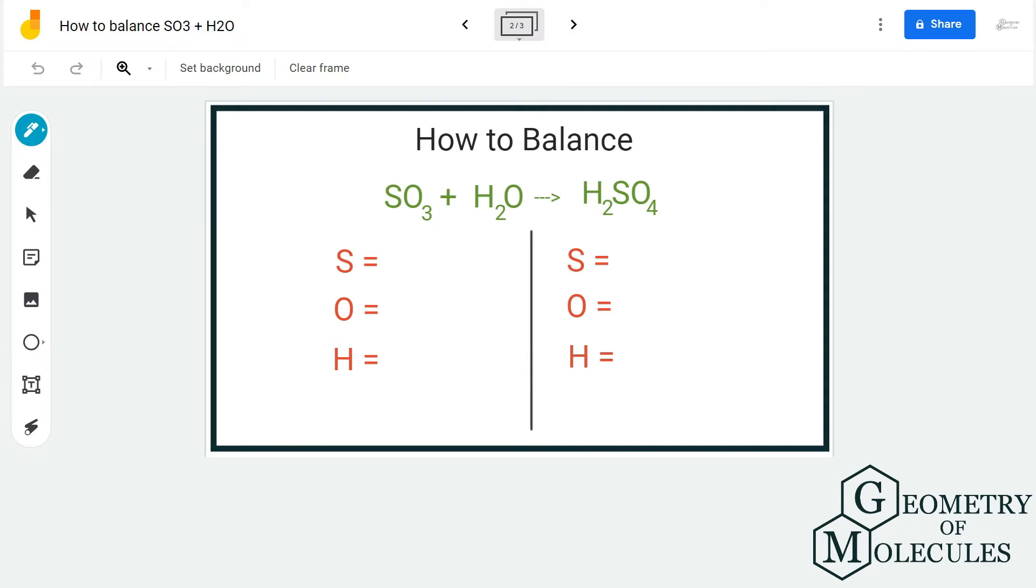On the reactant side we have one sulfur. For oxygen we have three here and one here, so total we have four oxygen atoms. Make sure to count each and every atom because that is what makes a difference.